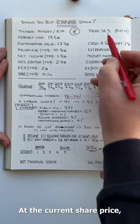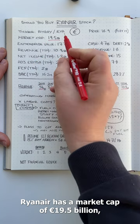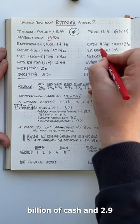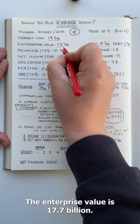At the current share price, Ryanair has a market cap of 19.5 billion euros with 4.7 billion of cash and 2.9 billion of long-term debt. The enterprise value is 17.7 billion.